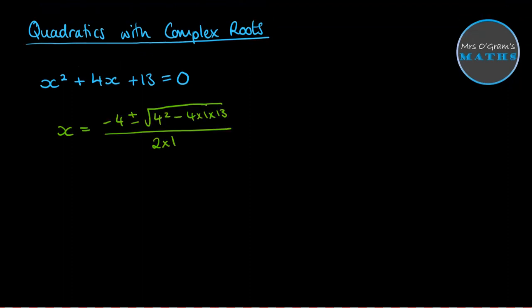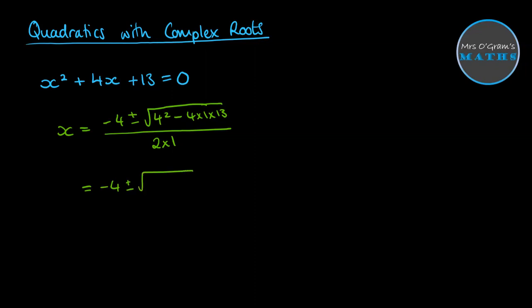So we get x equals minus 4 plus or minus the square root of 4 squared minus 4 times 1 times 13, all over 2, just using that b squared minus 4ac stuff. So then if we carry on with that, we get minus 4 plus or minus, and that square root becomes the square root of negative 36, all over 2.